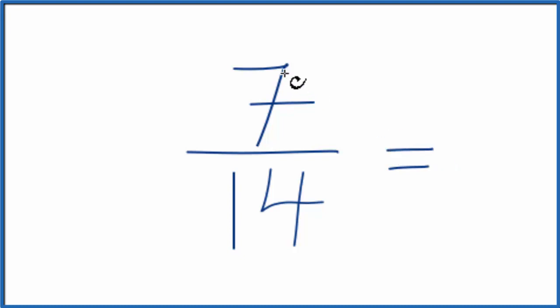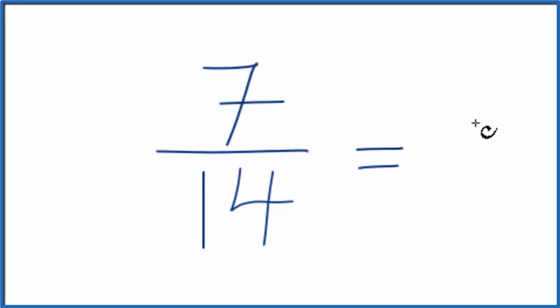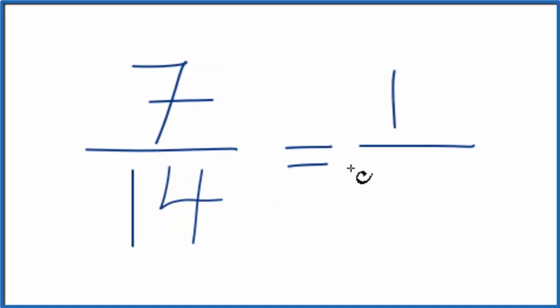So if we divide the top, the numerator, by 7, 7 divided by 7, that's 1, and then the denominator, 14 divided by 7, that's 2, we can say that we've simplified or reduced the fraction 7/14 to 1/2.